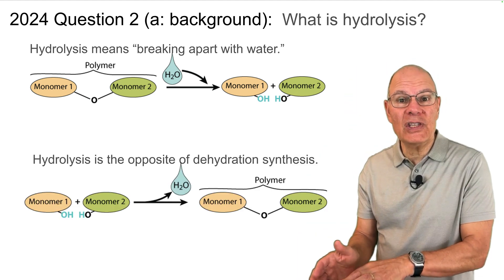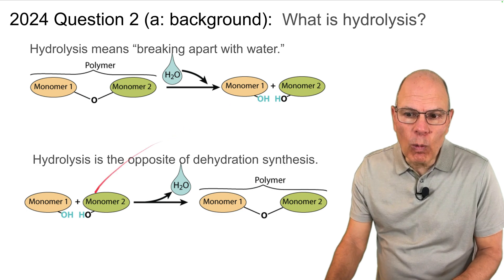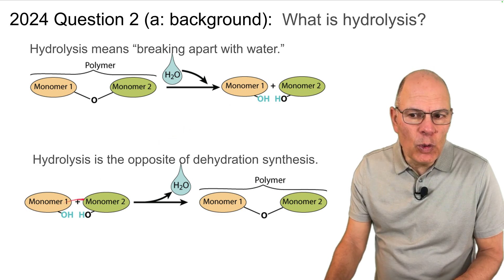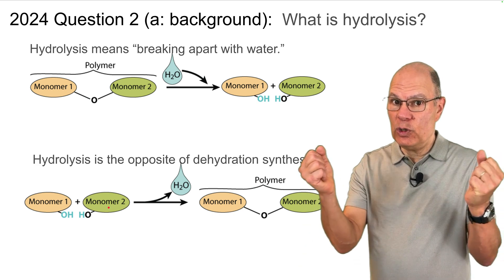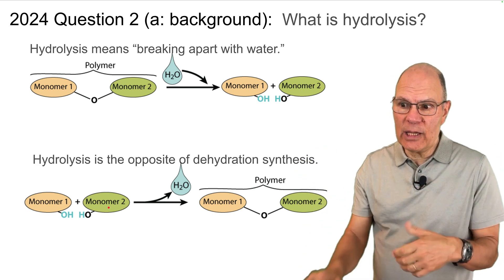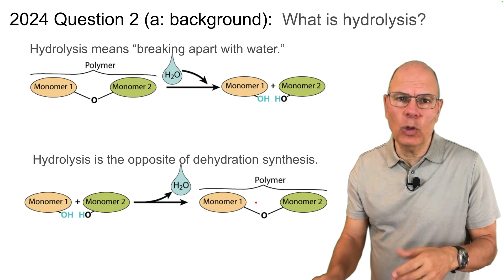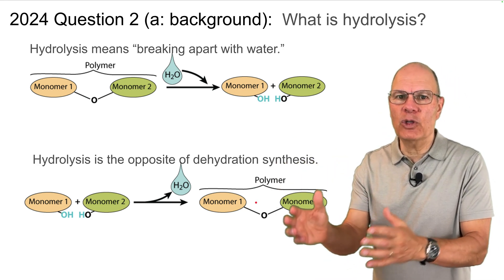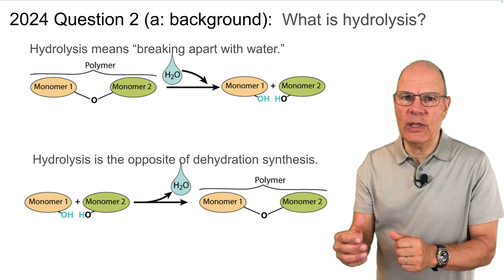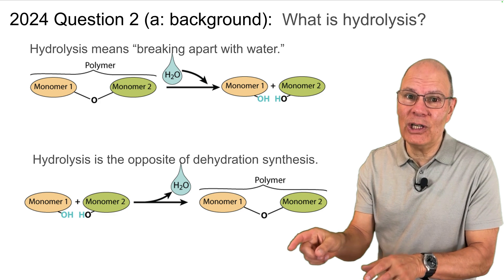Note that hydrolysis is the opposite of dehydration synthesis, where a water molecule is removed from two different monomers, and in the process, those two monomers are jammed together, forming, in this case, a dimer, a two unit molecule, or it can be at the end of a polymer. This is how polymers are built by dehydration synthesis. Why is that important? Because that might show up on the next FRQ.